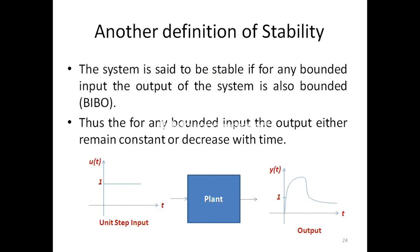Another definition of stability is BIBO stability — Bounded Input Bounded Output stability. A system is said to be stable if for any bounded input the output is also bounded. The output should either remain constant or decrease with time; it should not increase with time, otherwise at t → ∞ we get infinite output. For example, a unit step input applied to a stable plant produces an output that may overshoot but drops down to zero as t → ∞.